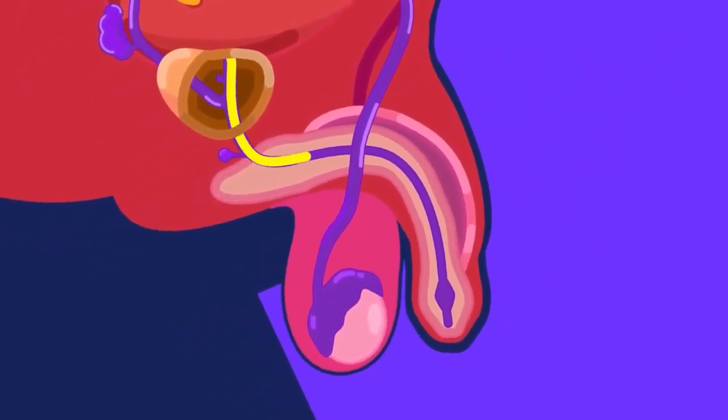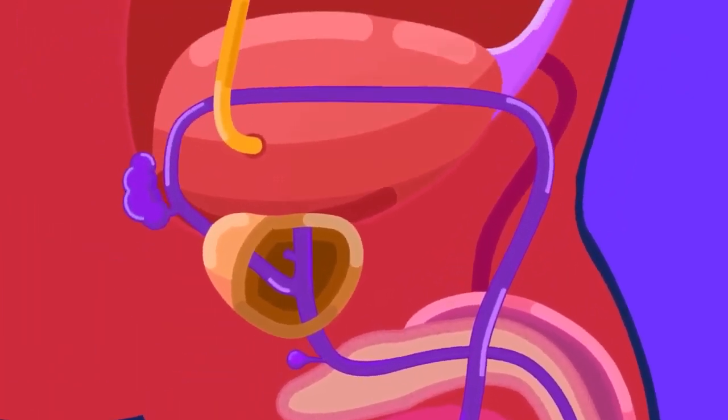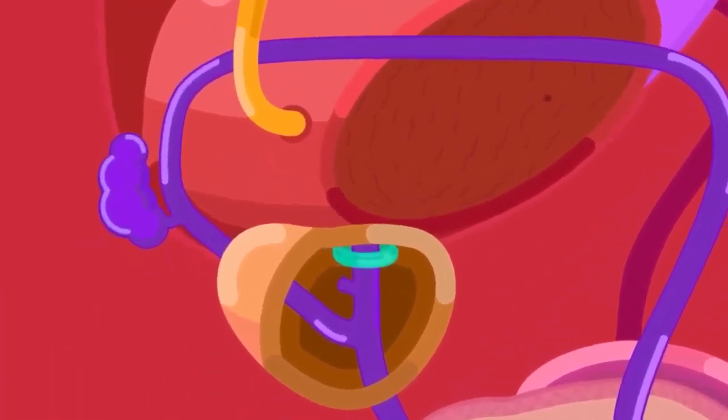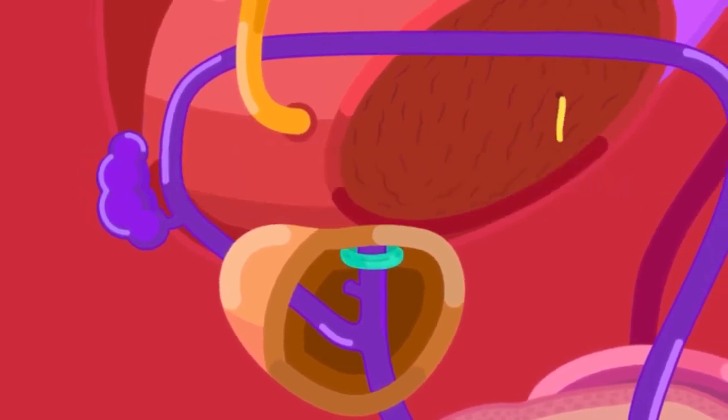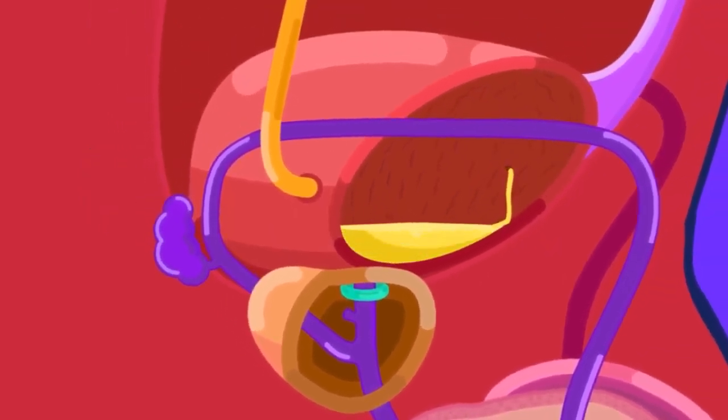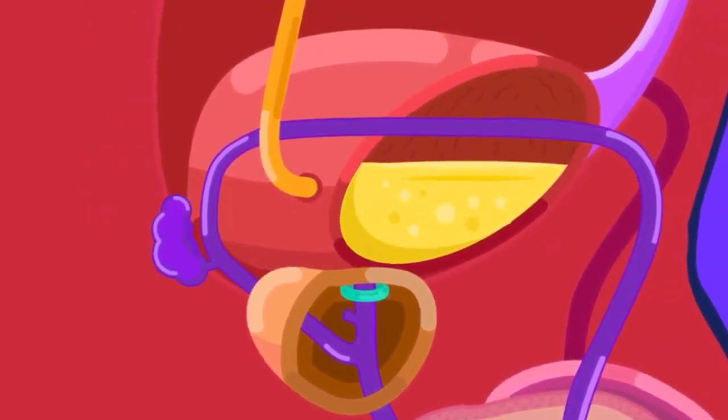Urine and semen will not pass through the urethra at the same time. This is due to a circular band of involuntary muscle called the internal urethral sphincter at the base of the urinary bladder that blocks urine from coming out or flux of semen from coming in during ejaculation.